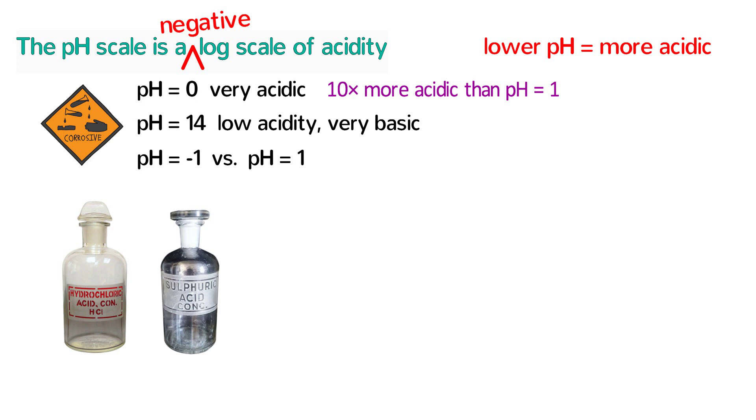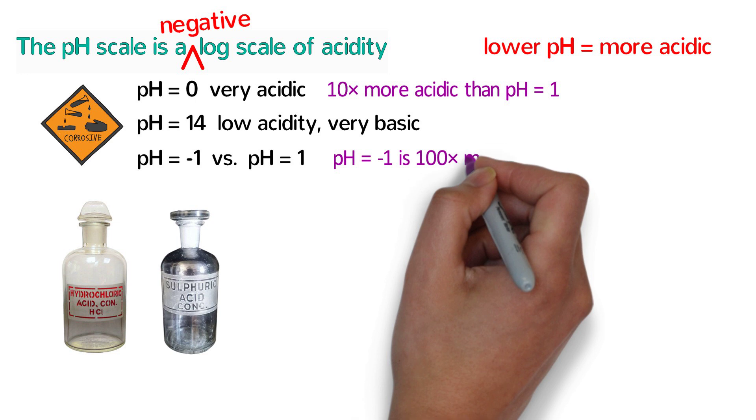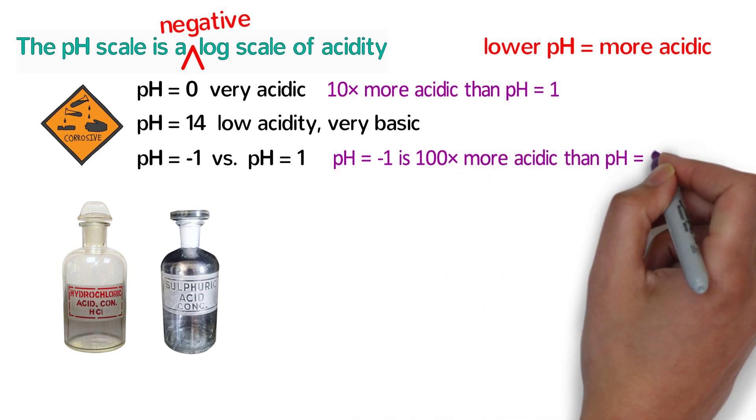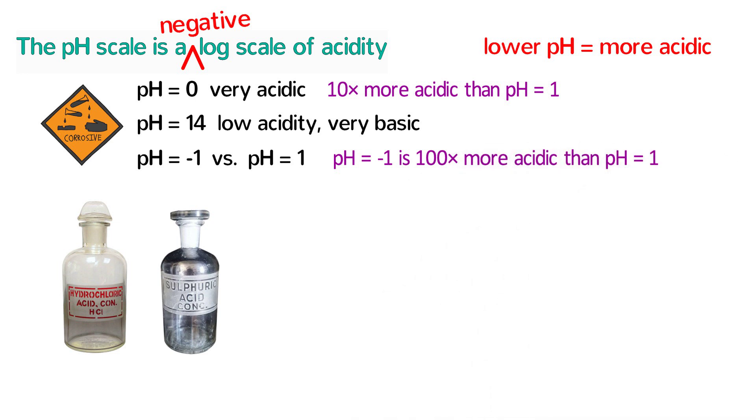So the answer to our question is that the pH of negative one is more acidic. In fact, it is a hundred times more acidic because it is two lower on the pH scale and ten squared is a hundred.